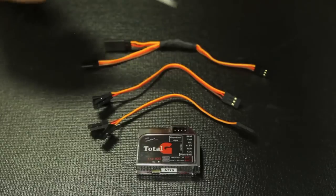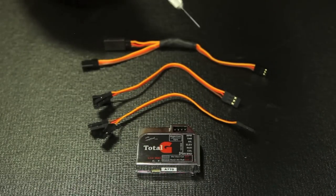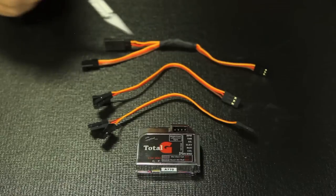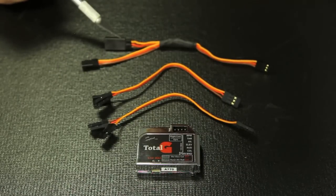Also included is a modified male-to-male adapter. This is how you're going to power your remote receiver and power the Total-G itself. Basically, you have male on one end, male on the other end, as well as one female.